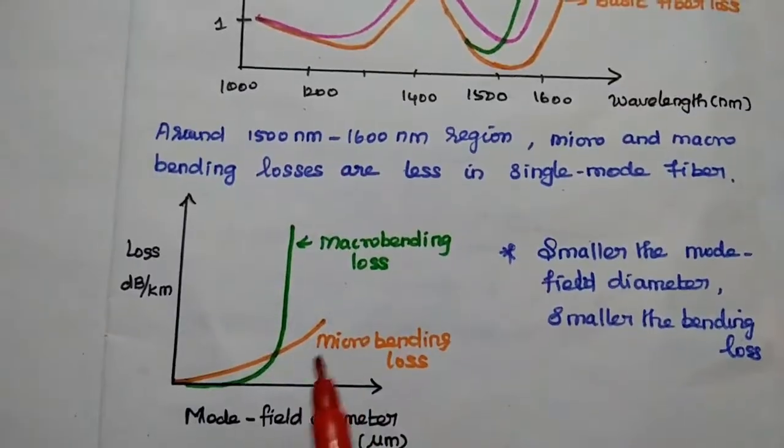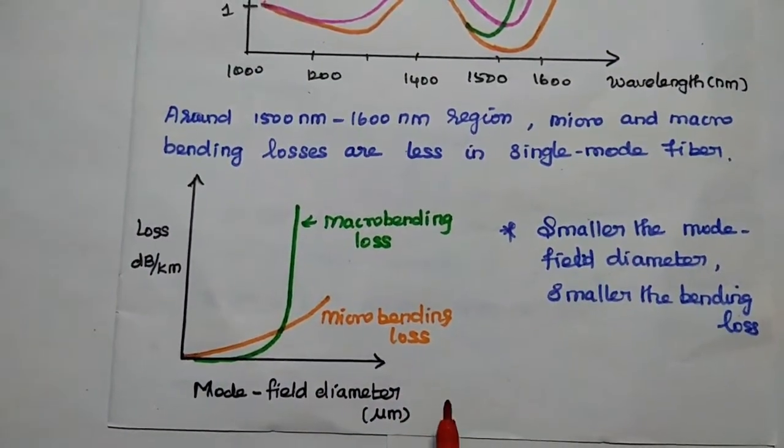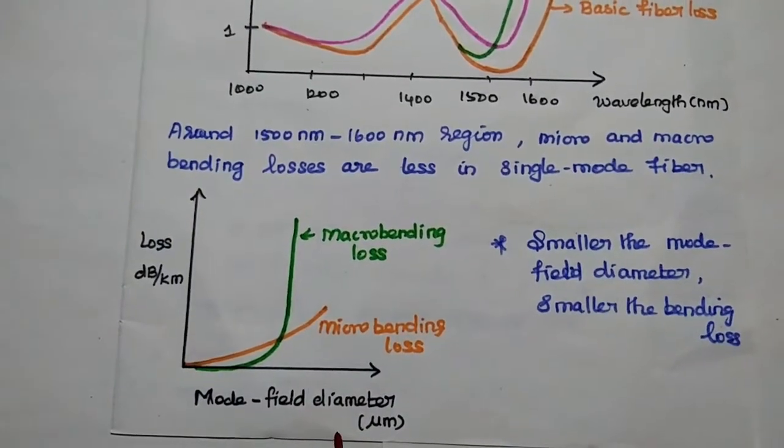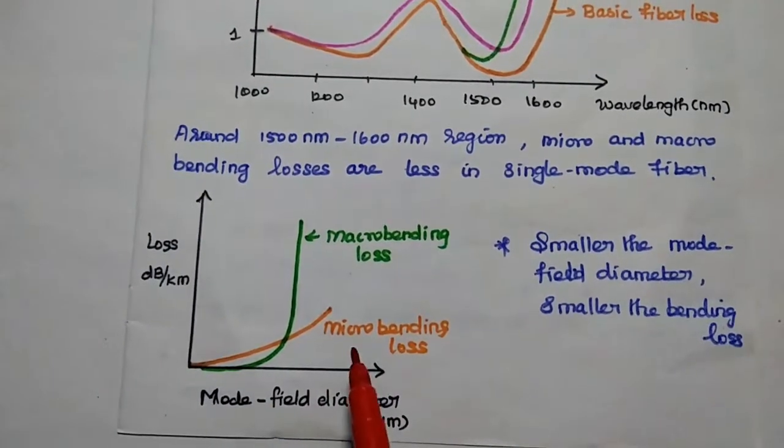The last one is the loss with respect to mode field diameter. In this one the smaller the mode field diameter then smaller the bending loss.